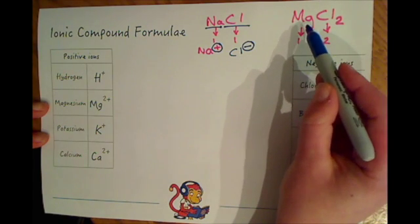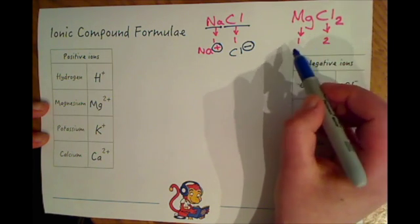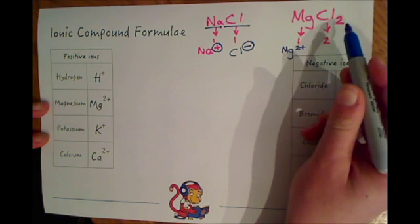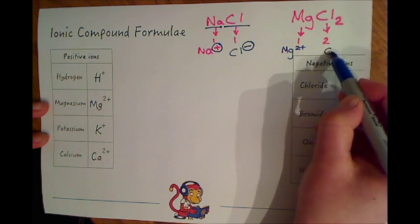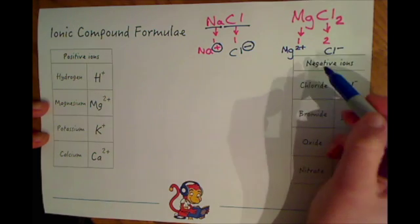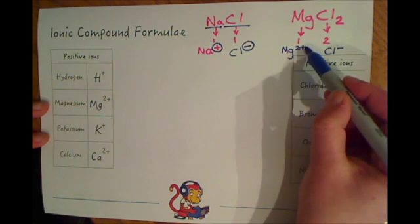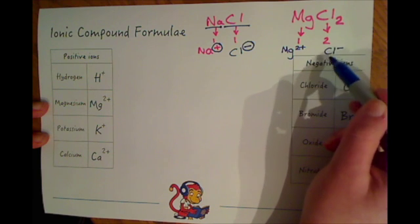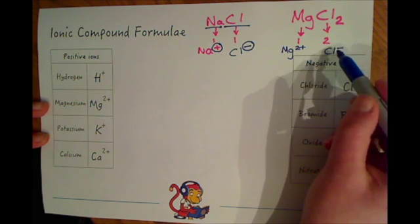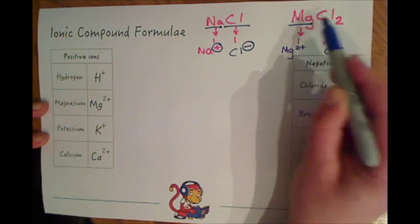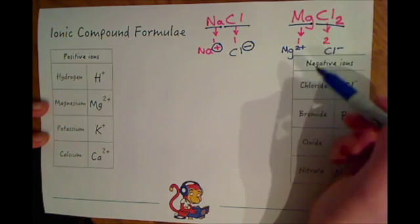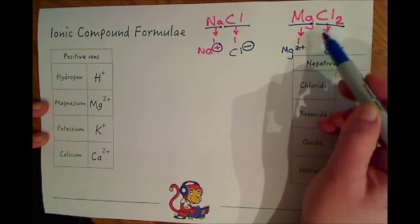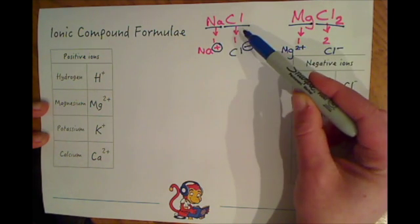Over here however we have magnesium which is Mg2+ this time and a chloride ion which is Cl-. So hopefully you'll be able to see that to cancel out the two pluses we will need two lots of the chloride ion, and that's how you end up with one Mg and two Cl chloride ions and hence you have MgCl2 here but you just have NaCl in this example.